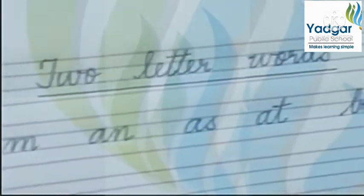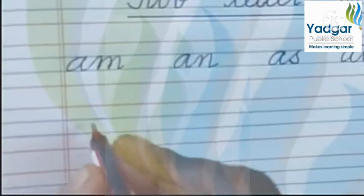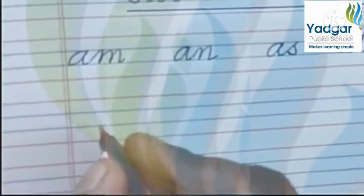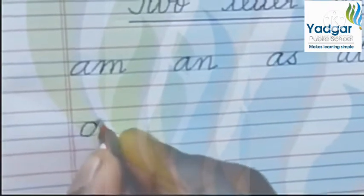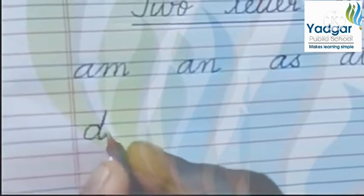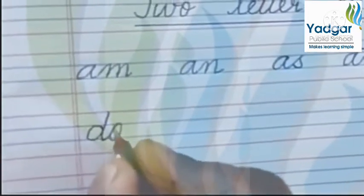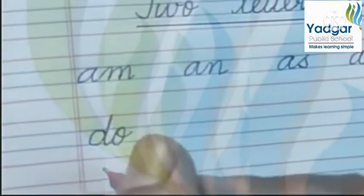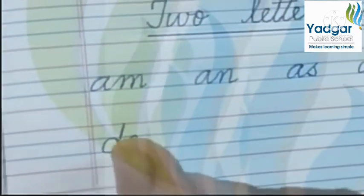Then from D, we have some two letter words. That is D-O, do. Only one two letter word which starts from D.